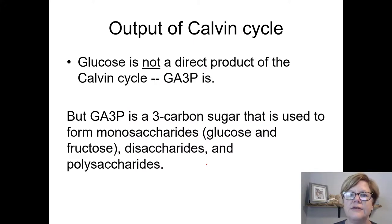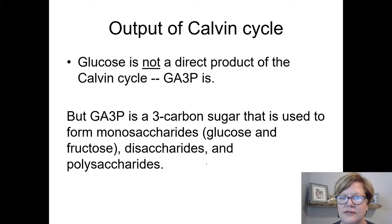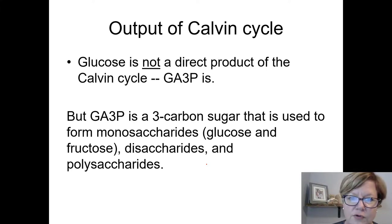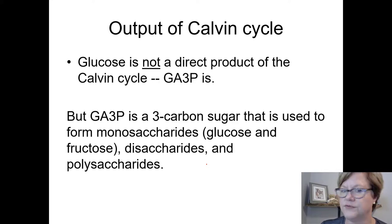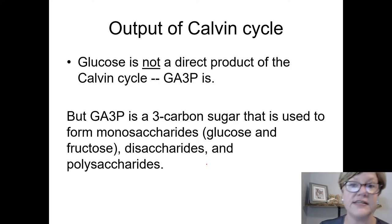Glucose is not directly made by the Calvin cycle — half of a glucose is made. GA3P stands for glyceraldehyde-3-phosphate, a three-carbon sugar. When you have two GA3Ps, the cell can join them to make glucose, fructose, or any six-carbon sugar, and from there join monosaccharides to make polysaccharides.